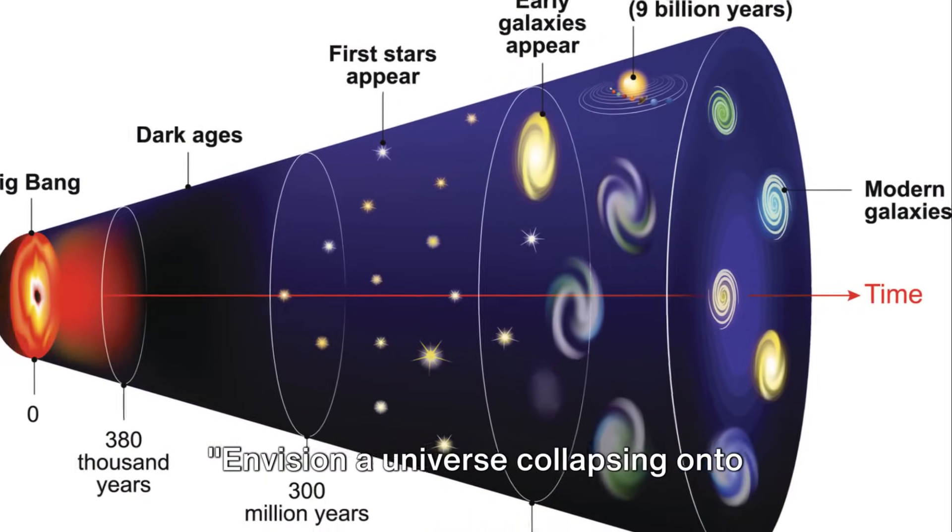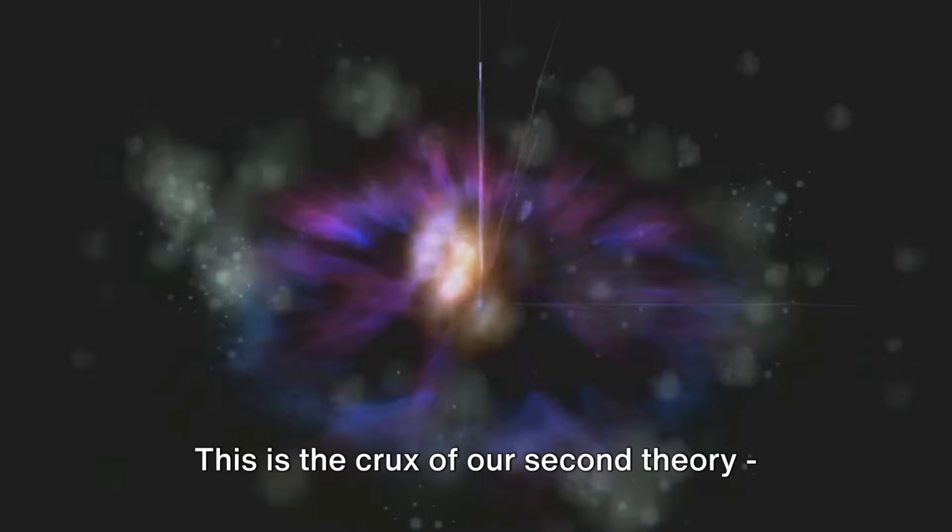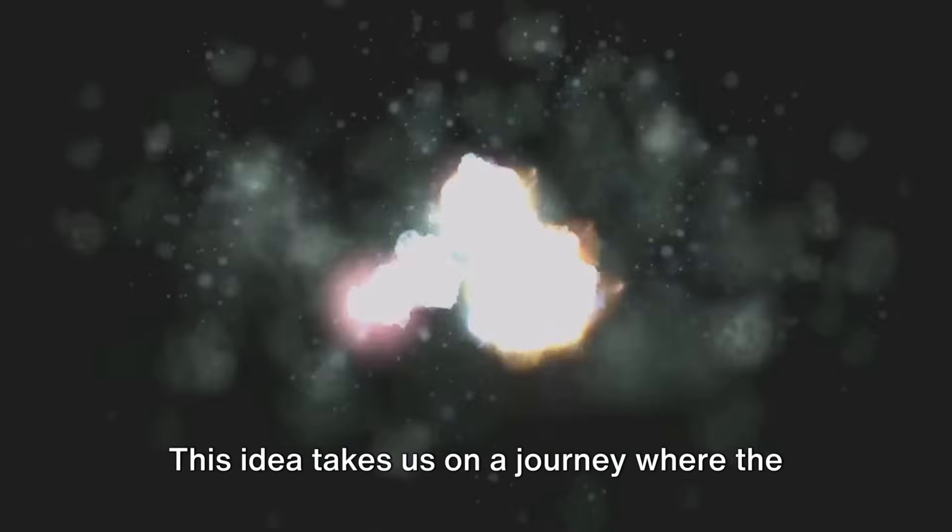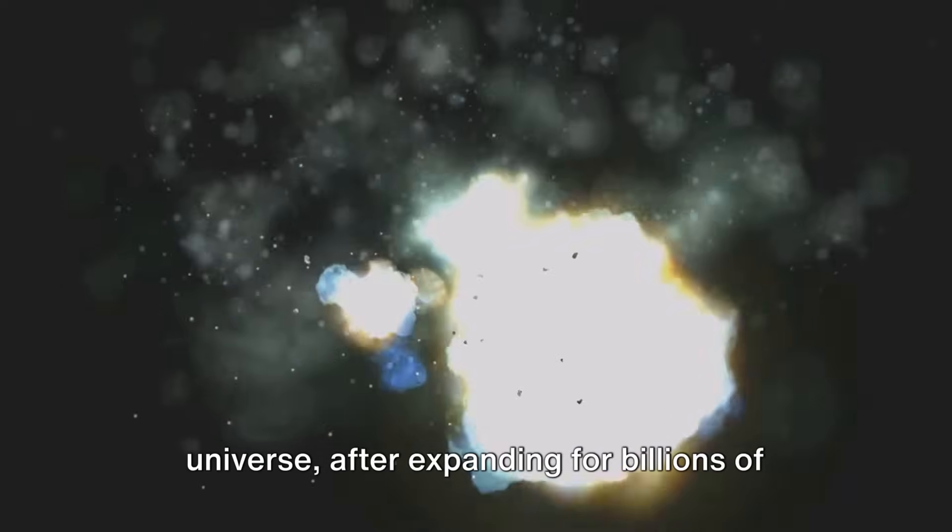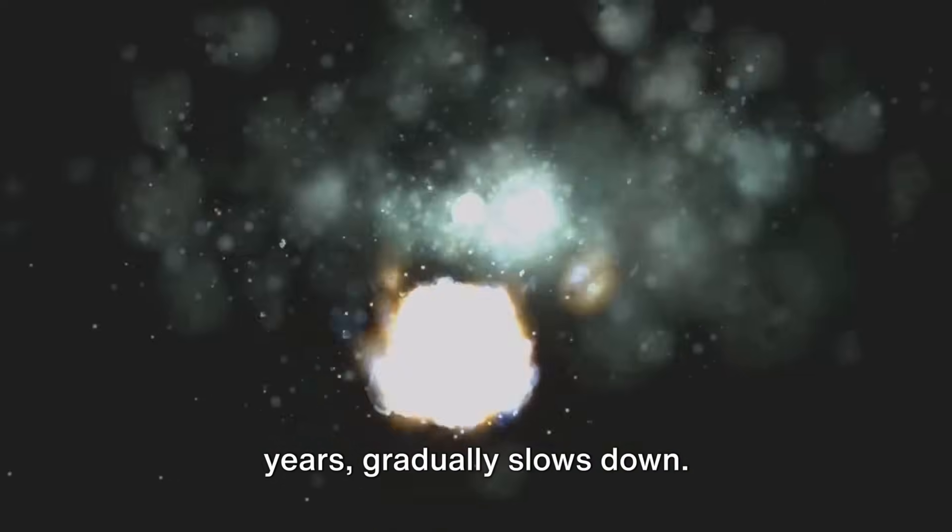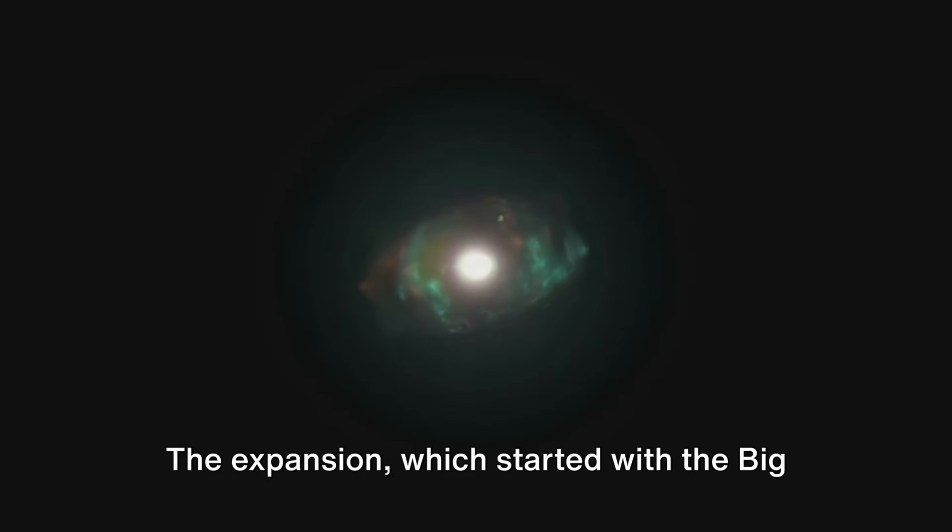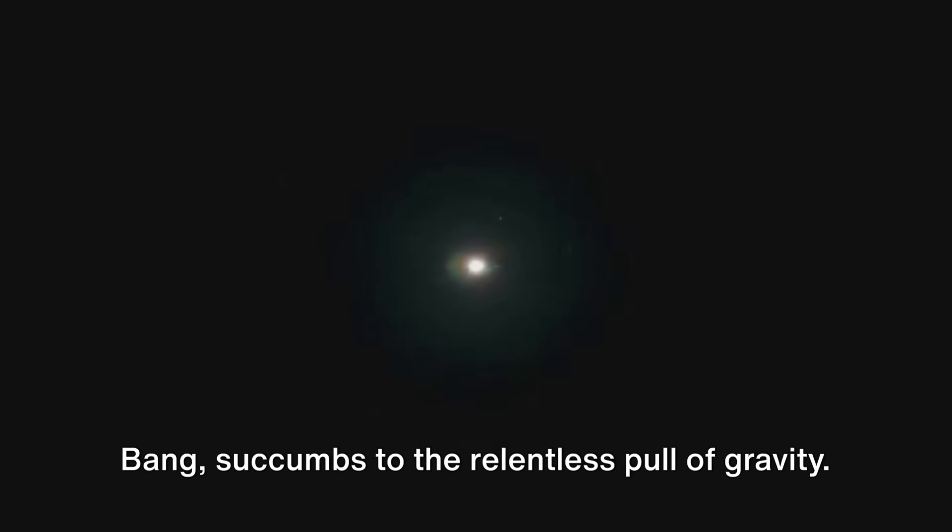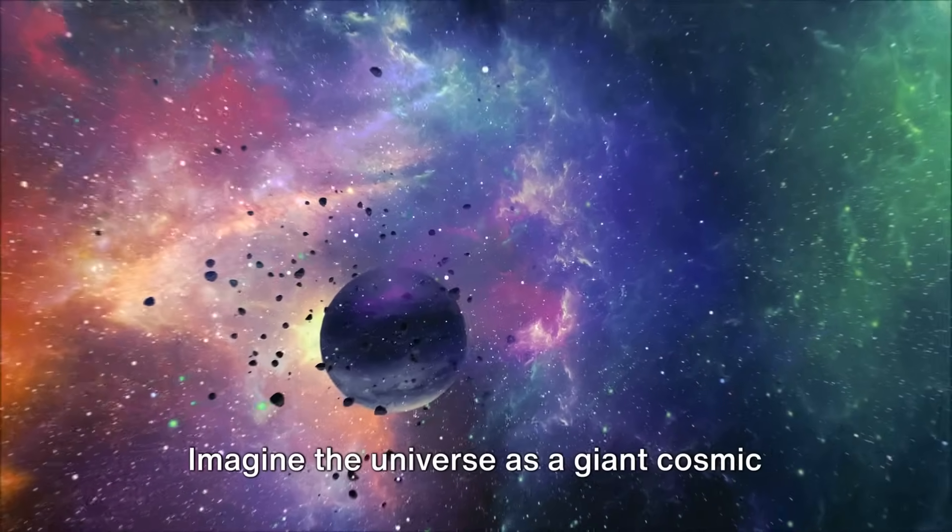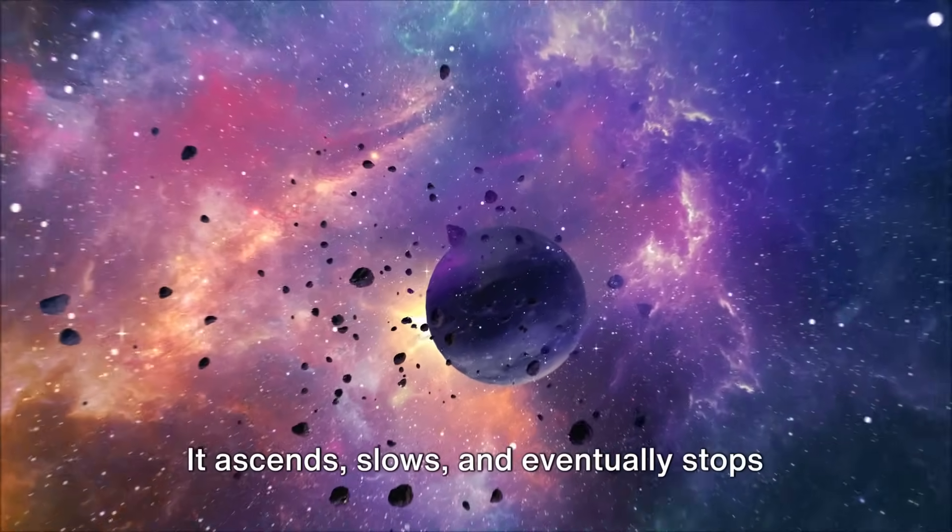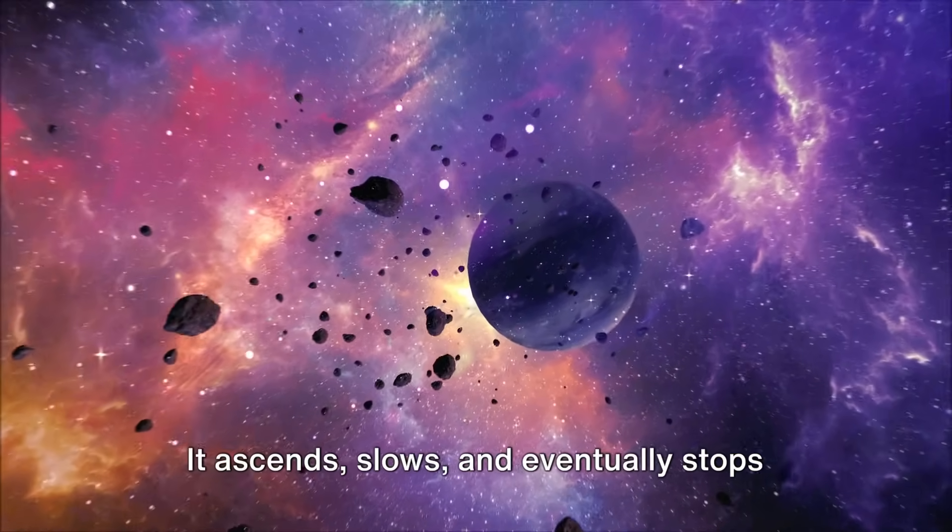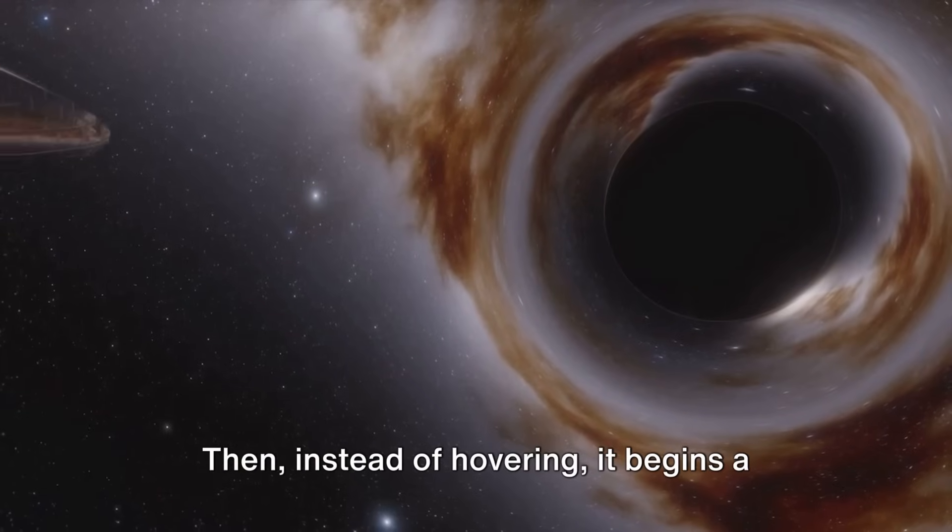Envision a universe collapsing onto itself, an ultimate implosion. This is the crux of our second theory, the Big Crunch. This idea takes us on a journey where the universe, after expanding for billions of years, gradually slows down. The expansion, which started with the Big Bang, succumbs to the relentless pull of gravity. Imagine the universe as a giant cosmic ball thrown upwards. It ascends, slows, and eventually stops at the peak of its trajectory. Then, instead of hovering, it begins a descent, pulled back by Earth's gravity.